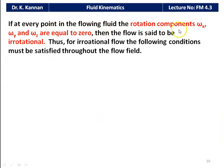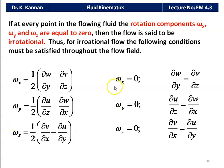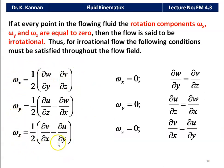If at every point in the flow field the rotation components ωx, ωy, and ωz are zero, then the flow is said to be irrotational. For irrotational flow, the following conditions must be satisfied throughout the flow field: ∂w/∂y = ∂v/∂z, ∂u/∂z = ∂w/∂x, and ∂v/∂x = ∂u/∂y. These are the conditions for irrotational flow, while the omega equations apply to rotational flow.